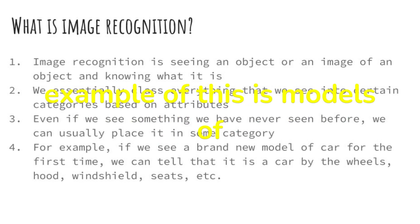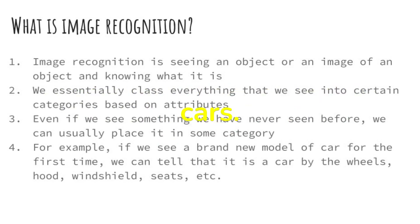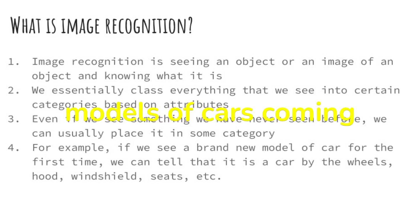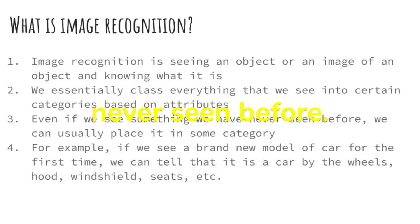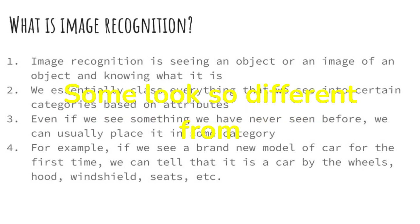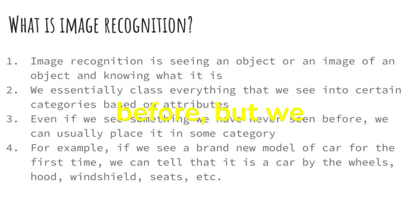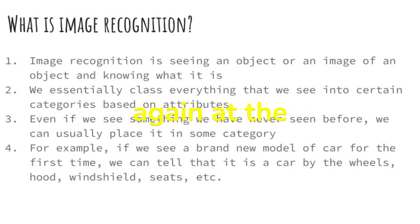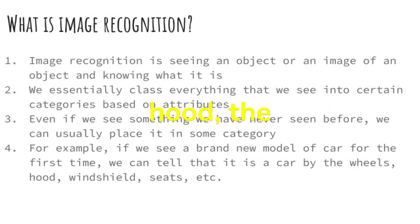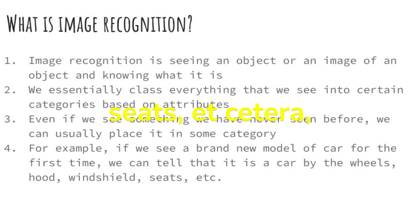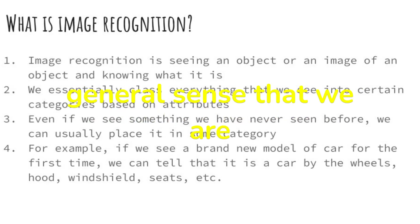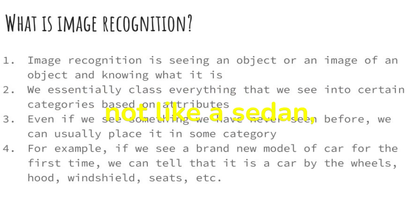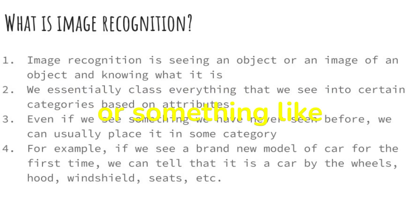Another example of this is models of cars. Every single year, there are brand new models of cars coming out, some of which we've never seen before. Some look so different from what we've seen before, but we recognize that they are all cars. We can take a look at the wheels, the hood, the windshield, the number of seats, etc., and just get a general sense that we are looking at some sort of a vehicle, even if it's not like a sedan or a truck.